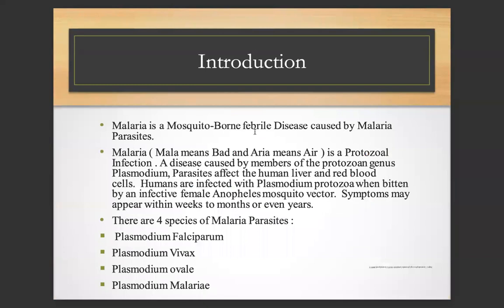Introduction: Malaria is a mosquito-borne febrile disease caused by malaria parasites. The word 'malaria' — molla meaning bad and aria meaning air — is a protozoal infection, a disease caused by members of the protozoan genus Plasmodium. Parasites affect the human liver and red blood cells. Humans are infected with Plasmodium protozoa when bitten by an infected female Anopheles mosquito vector. Symptoms may appear within weeks to months or even years. There are four species of malaria parasites: Plasmodium falciparum, Plasmodium vivax, Plasmodium ovale, and Plasmodium malariae.